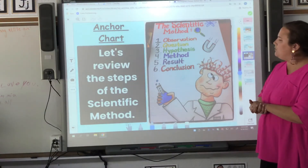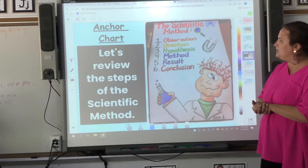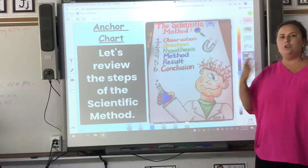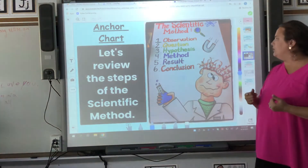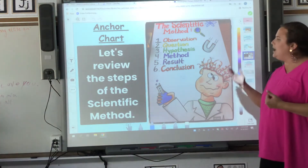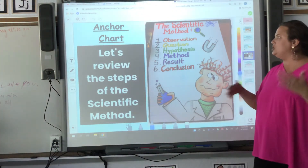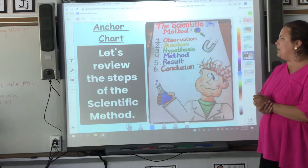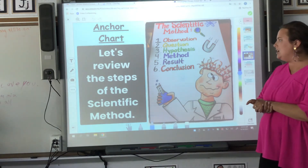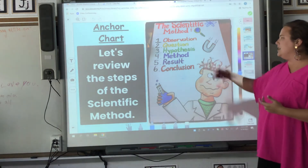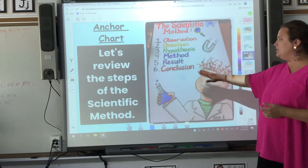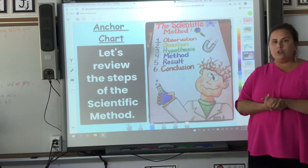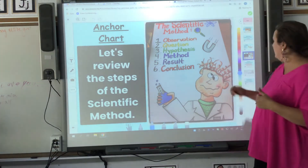So if we're going to review the steps of the scientific method, we know the first thing we have to do is observe. Then we have to question — make questions about our observation. Come up with a hypothesis, discuss our method, see the results, and draw our conclusion from our science experiment.